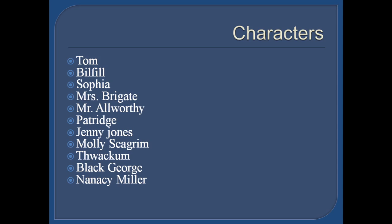So we can see here our characters are: Tom, Billfill, Sophia, Mrs. Brigate, Mr. Alworthy, Patridge, Jenny Johns, Mary Sygram, Black George, and Nancy Miller. These are our important characters of the novel.